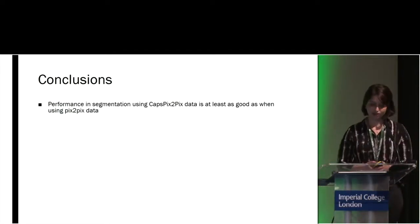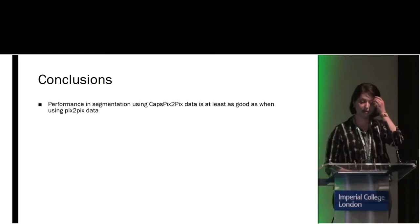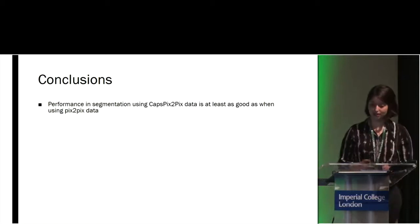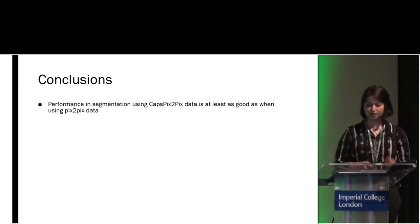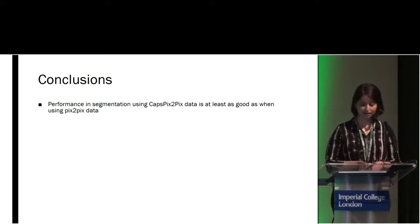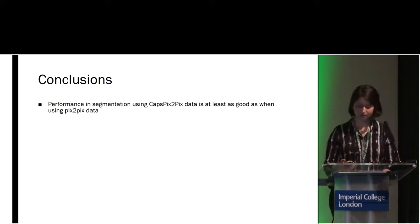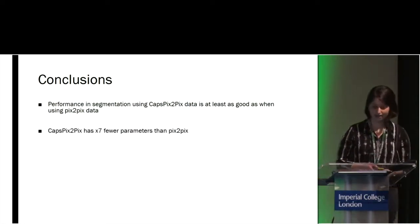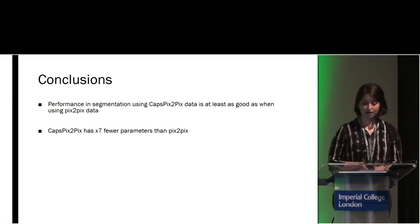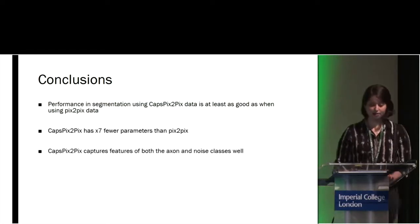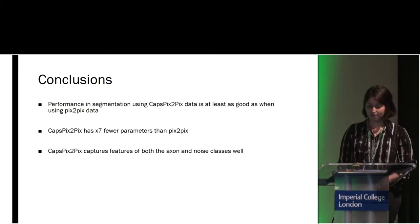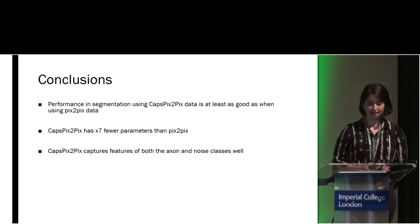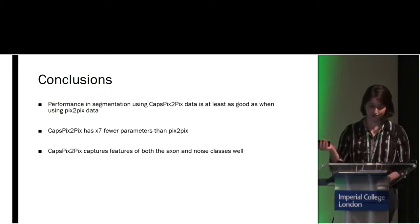In conclusion, we found that segmentation performance using CapsPix2Pix and Pix2Pix is very similar, but we can actually improve segmentation results if we pre-train on CapsPix2Pix data. In addition, we achieve this while still having seven times fewer parameters. We also found that CapsPix2Pix can capture both the axon and noise classes very well by segregating and grouping different features into different capsules.